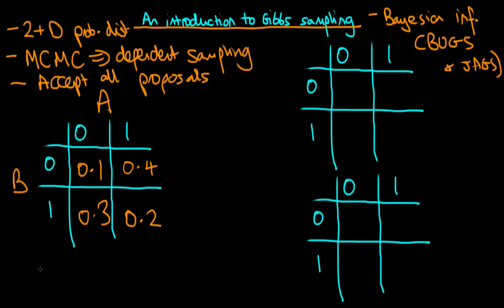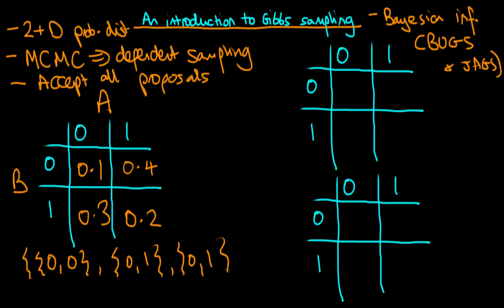Suppose that what we want to do is to sample from this joint distribution. What we would be doing is generating sequences of paired outcomes. We might first sample a value of 0, 0 — the first 0 indicating that horse A did not win its race, and the second 0 indicating that horse B did not win its race. Then we might sample 0, 1, then 0, 1 again, etc. We're generating sequences of paired events where each pair has a probability given by this table here.